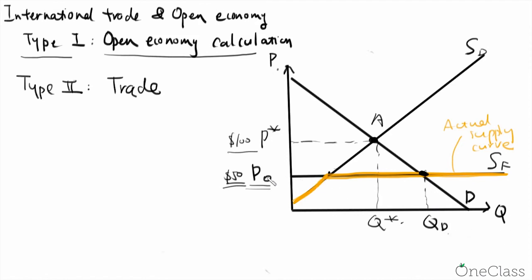And if the suppliers are only allowed to charge $50, this QS is whatever will be supplied by the domestic suppliers. And the difference here is our export.